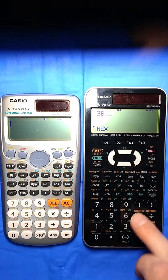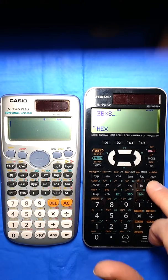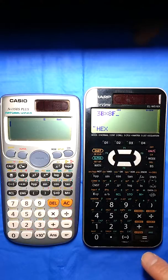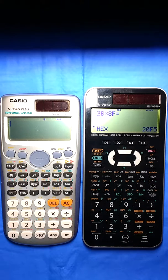And I do 3b times 8f. Same thing where I don't have to tell it alpha for the letters. And I hit my equals. I get my answer. 20f5.